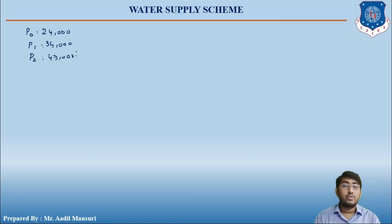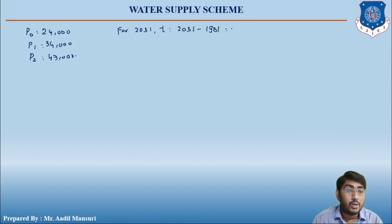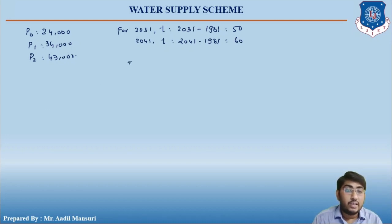We need to find t. For 2031: t = 2031 − 1981 = 50. For 2041: t = 2041 − 1981 = 60. We take n = 10 years.